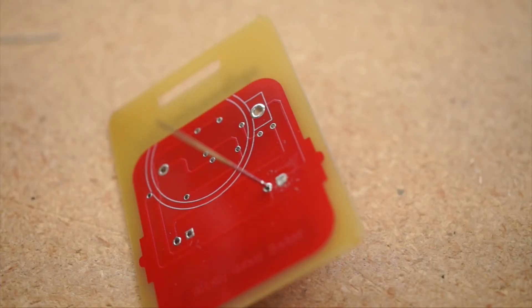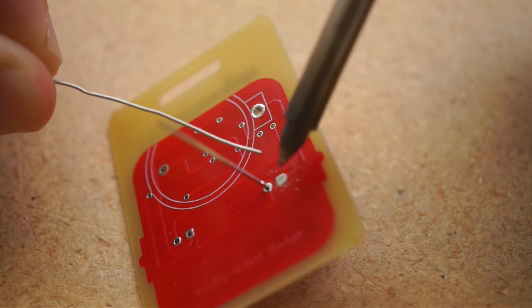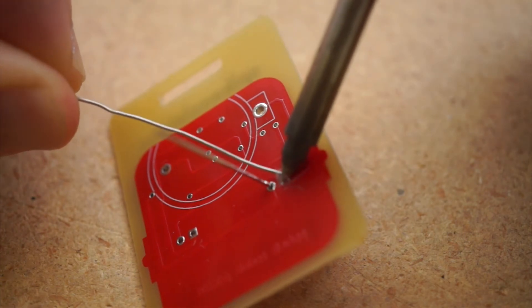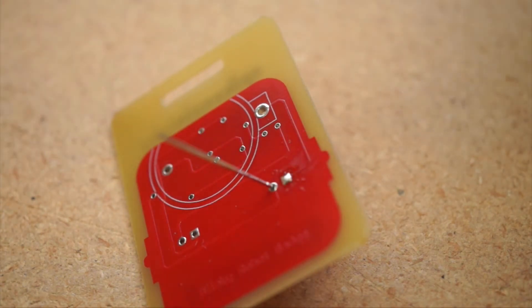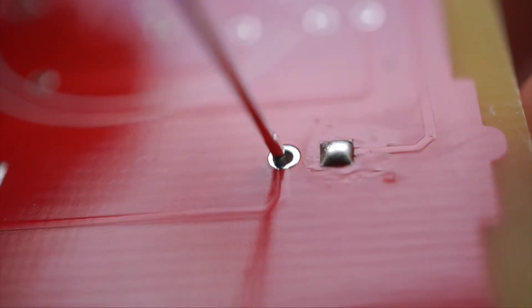Then come back around with your soldering iron, reheat the connection very quickly, and hit it with just a touch of solder. It takes some practice, but if you get it right, you get a perfect little dome.